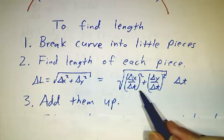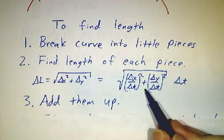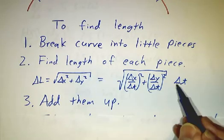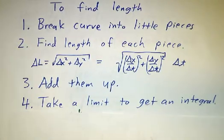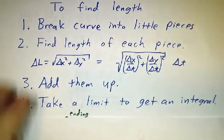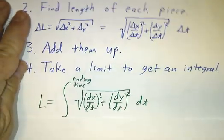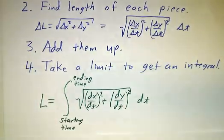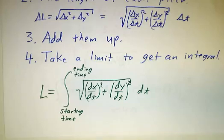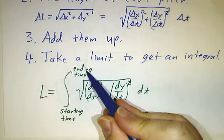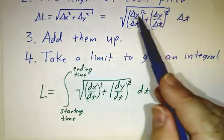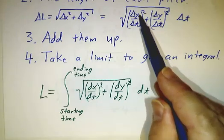We're adding up some function of t times Δt for all the different values and by definition, the limit as you chop things up finer and finer is an integral. So our total length is the integral from the starting time to the ending time. The limit of this is instead of Δx/Δt, we get dx/dt.